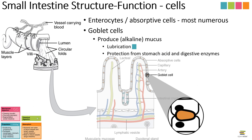The next type of cell are goblet cells, interspersed between enterocytes. Goblet cells play an important role because they produce mucus — specifically alkaline mucus in the duodenum — which helps neutralize the acidic chyme coming from the stomach. This mucus is also involved in lubrication, and its alkalinity can protect the intestinal walls from digestive enzymes in the lumen. Just like the stomach, you don't necessarily want your enzymes — which are breaking down macromolecules — to interact with the cells of the lining, because cells are themselves composed of macromolecules and could be damaged.